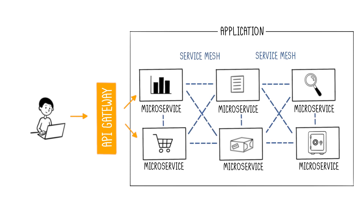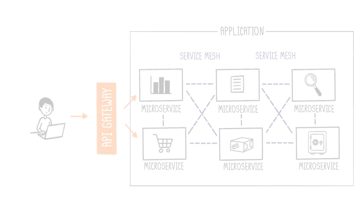There is often confusion between API Gateway and Service Mesh. The main difference is that the API Gateway facilitates communication between external clients, microservices, and services via their APIs, while the Service Mesh is a network service that facilitates communication between microservices internally.